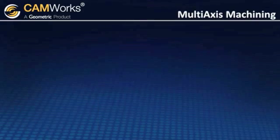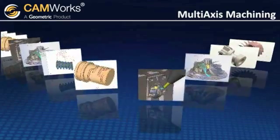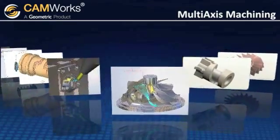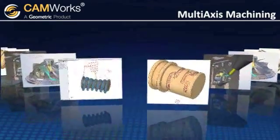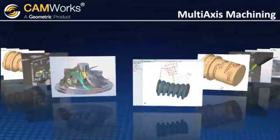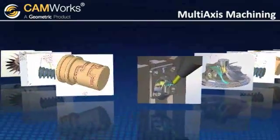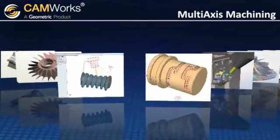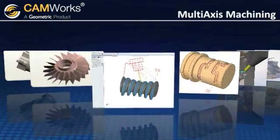CamWorks multi-axis machining provides a powerful set of cutting strategies that meet the demands of complex shapes such as camshafts, impellers, turbine blades, cutting tools, 5-axis trimming, and undercut machining and mold and die making.